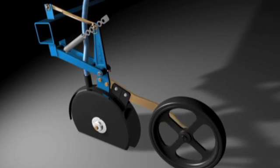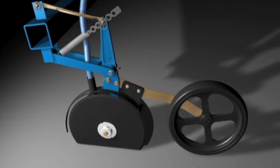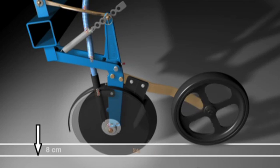The Coulters now create a deeper furrow, while the depth control wheel continues to monitor the exact depth. The soil can be penetrated up to 8 cm by the double disc Coulters.